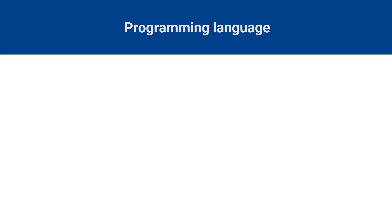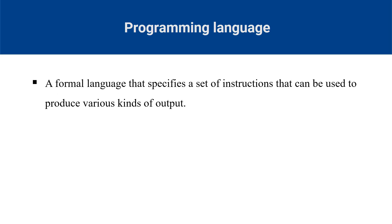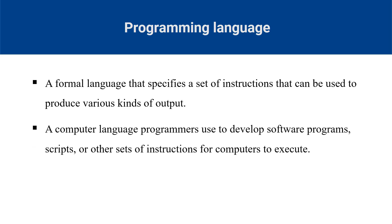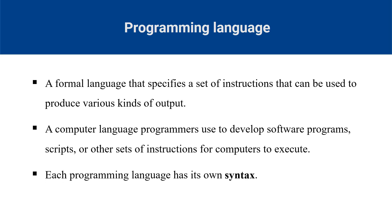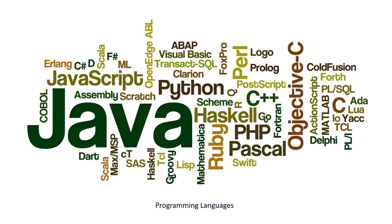What is a programming language? A programming language is a formal language that specifies a set of instructions that can be used to produce various kinds of outputs. Programmers use programming languages to develop software programs, scripts or other sets of instructions for computers to execute. Each programming language has its own syntax, which is a set of rules that govern how the language is used. Once a programmer learns the language syntax, they can write the source code in a text editor or IDE. There are over 1000 programming languages available, and the choice of which language to use depends on the specific application being developed, as well as the maintainability, scalability, performance and security requirements of the app.